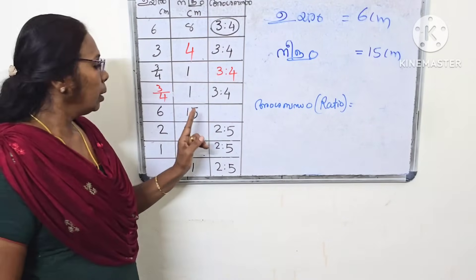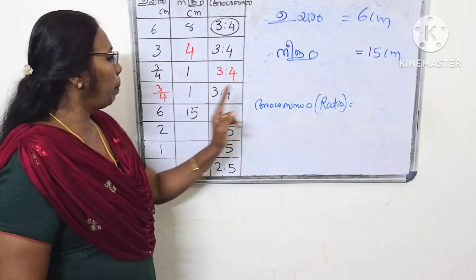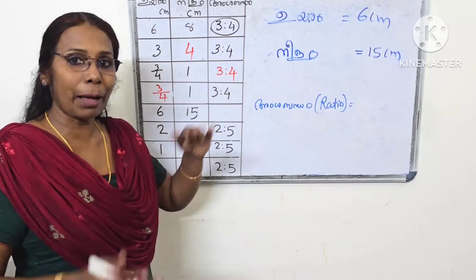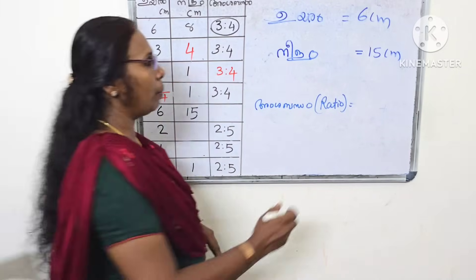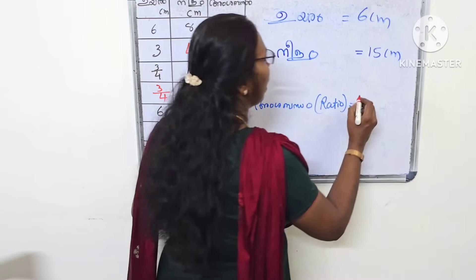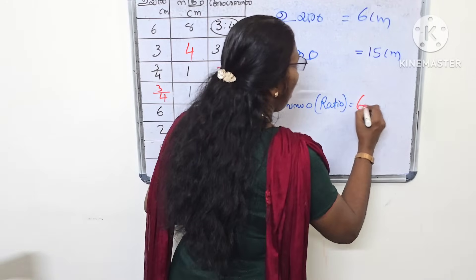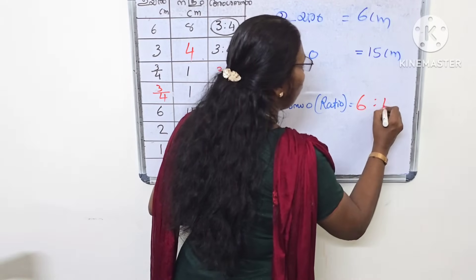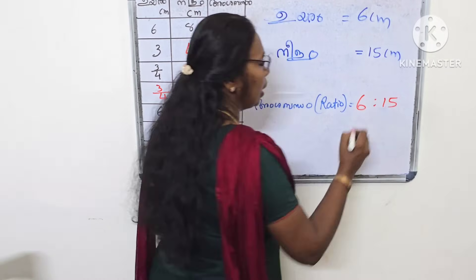2 is to 5cm. 3 is to 5cm. This is the ratio. How do you say? 4 is to 5cm.